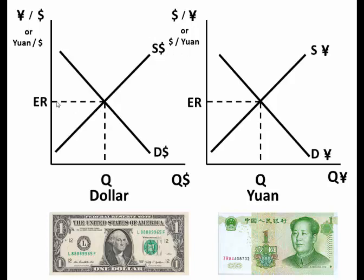What you end up with is a supply and demand for dollars — wherever they meet is the exchange rate — and a supply and demand for the Yuan, and wherever they meet is also the exchange rate.